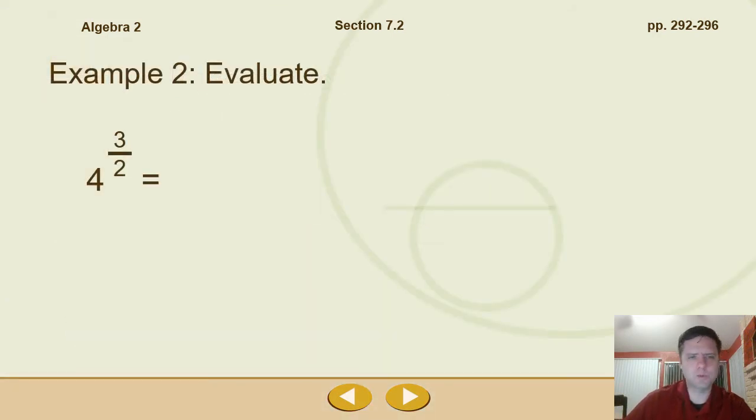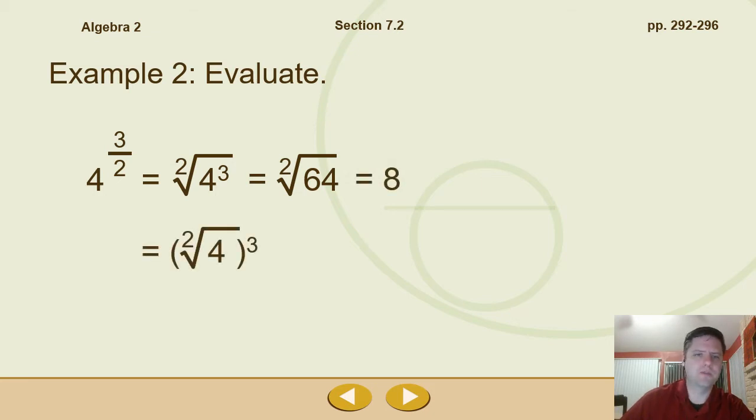So evaluating this one, I think a lot of times, if at all possible, taking the root first is easier. But notice here, you could do this this way. You could do 4 to the third power and get 64, and then take the square root of 64 and get 8. Or as I said before, it's probably easier to take the square root first. Square root of 4 would be 2, 2 cubed. 2 times 2 is 4 times 2 is 8. Notice you get the same answer either direction, either way.